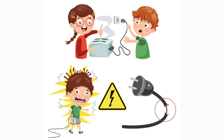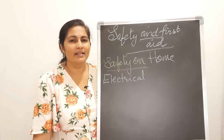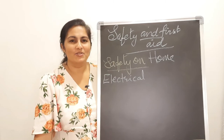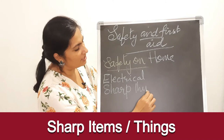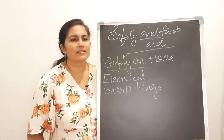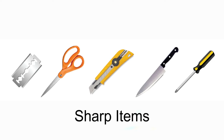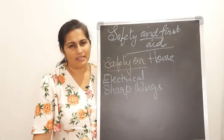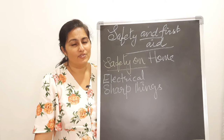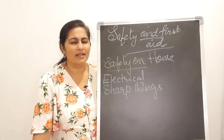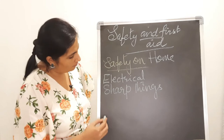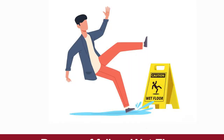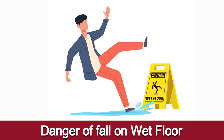Do not go near any electrical appliances when they are on — let elders handle them. The next home safety concern is sharp objects: knives, scissors, blades, pins, needles, screwdrivers — all sharp items should be kept away from the reach of children, safely stored in toolboxes. The next danger is wet floors, which can cause falls in the bathroom and kitchen.